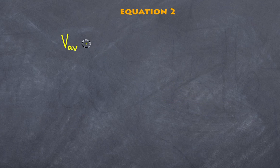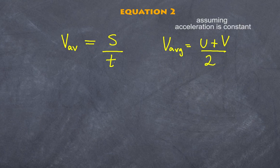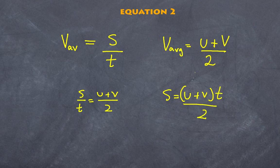Let's look at equation number two. The average velocity of any object is the total displacement divided by total time. But the average velocity can also equal the initial velocity plus the final velocity, divided by two. Combining both expressions for average velocity, I get S/T = (U + V)/2. Rearranging gives S = (U + V) × T/2. That is equation two. Again, it has four variables — I need to know three to find the fourth.